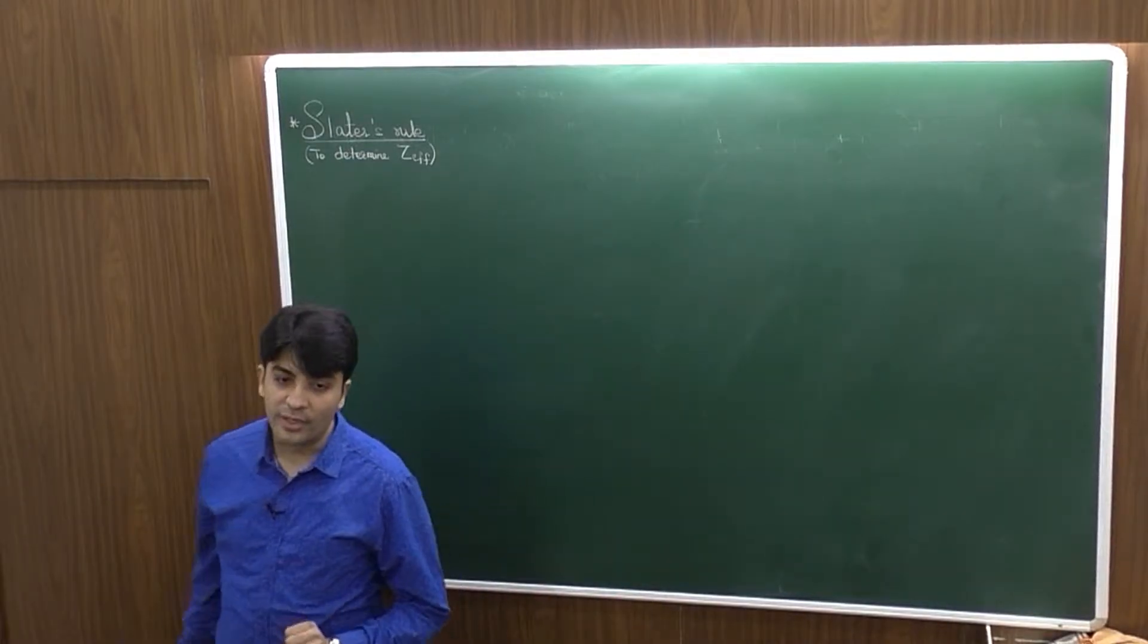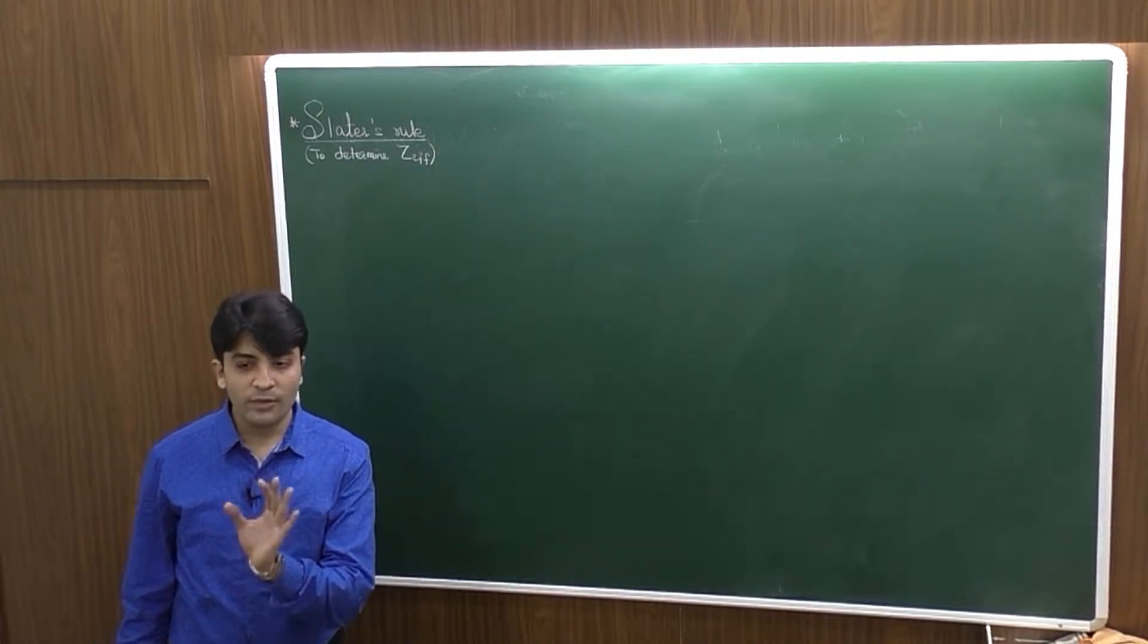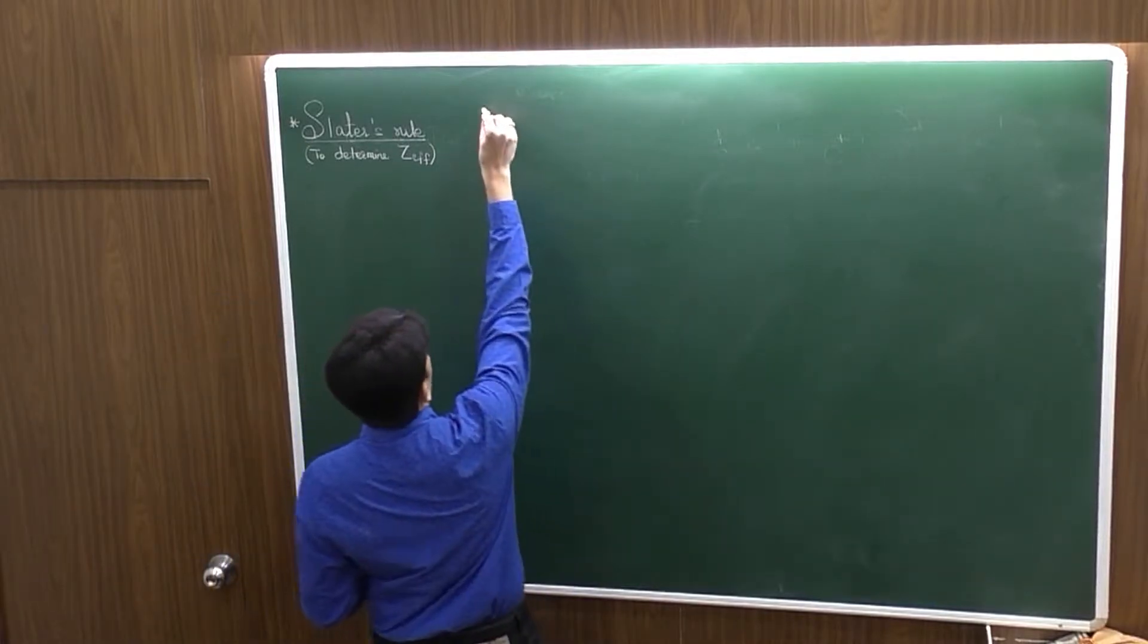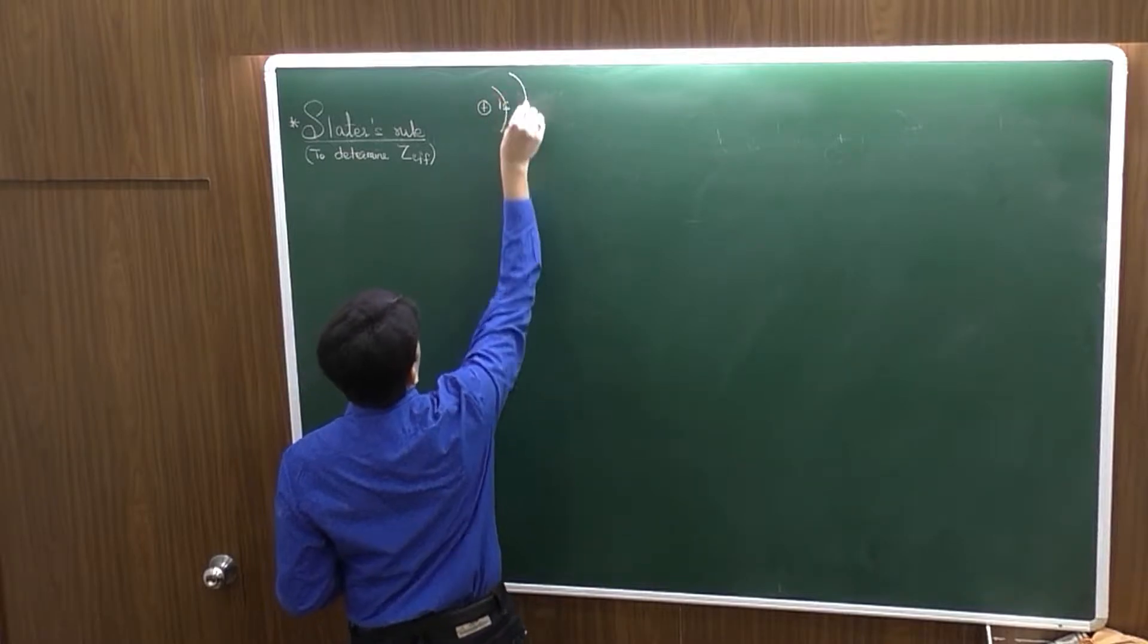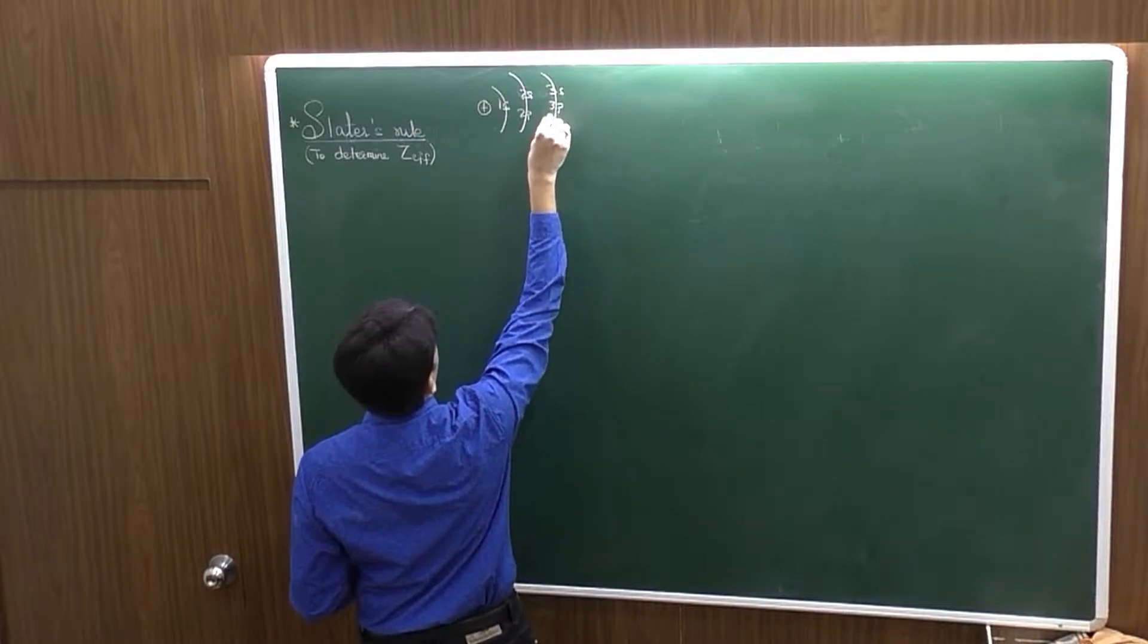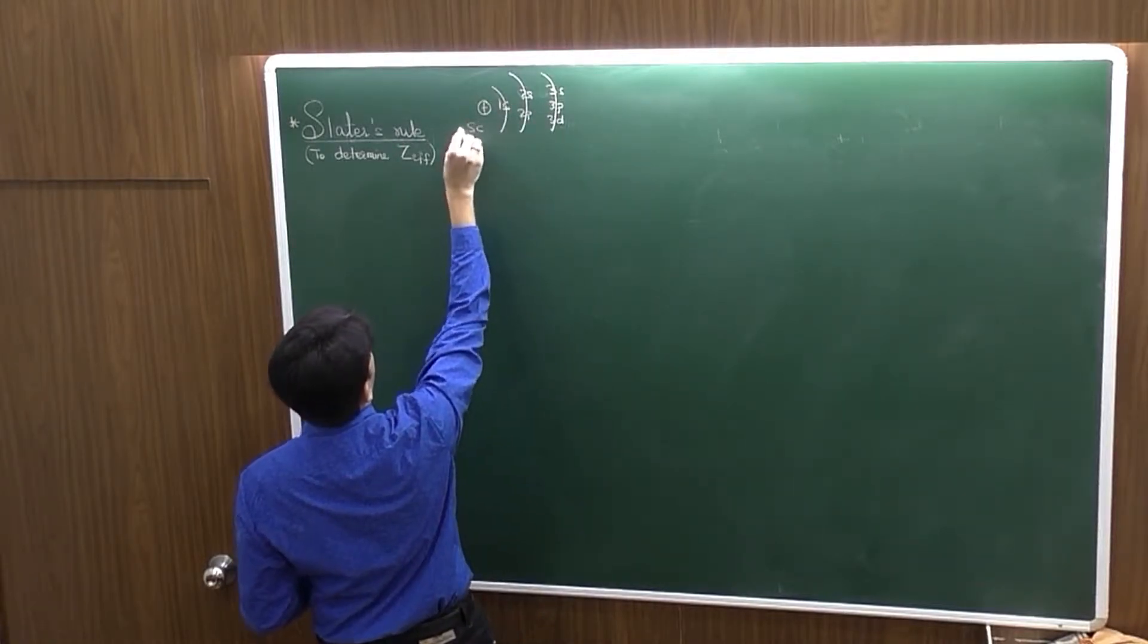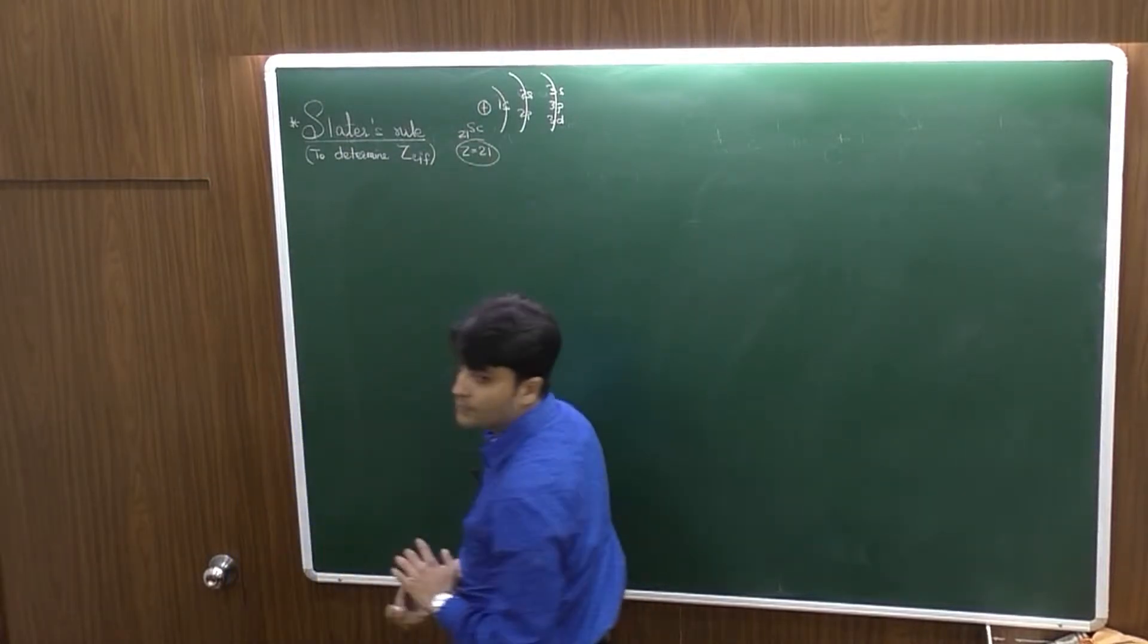Slater's rule is first of all to determine the Zeff. We have been talking about effective nuclear charge. If I talk about the electrons present in the first shell 1S, then 2S, 2P, 3S, 3P, 3D, and let's say I am talking about scandium 21, meaning the number of protons in the nucleus are 21.